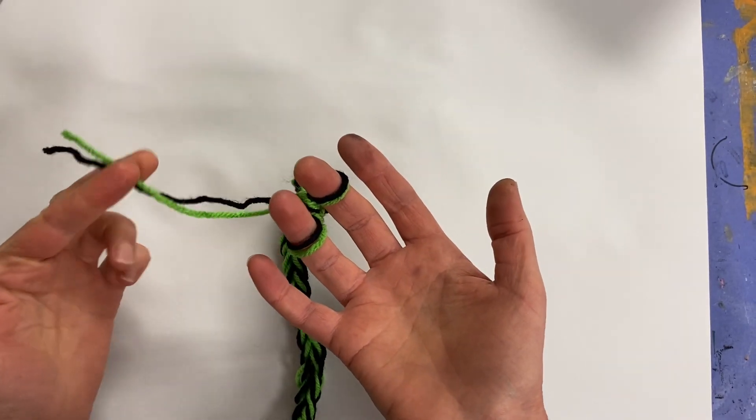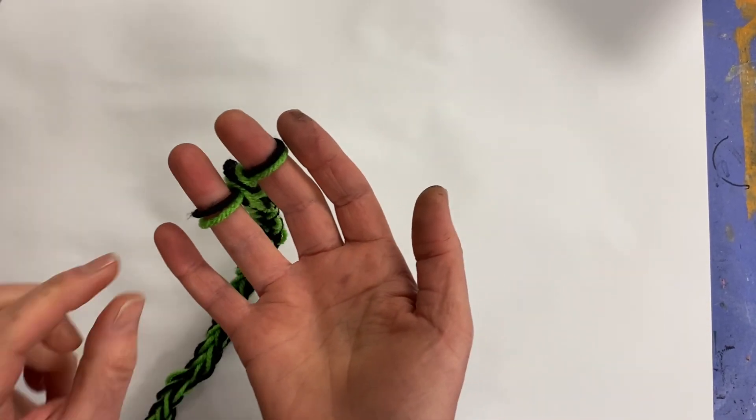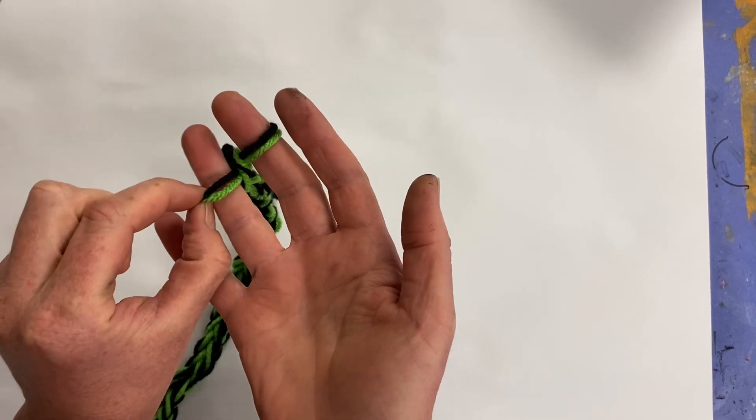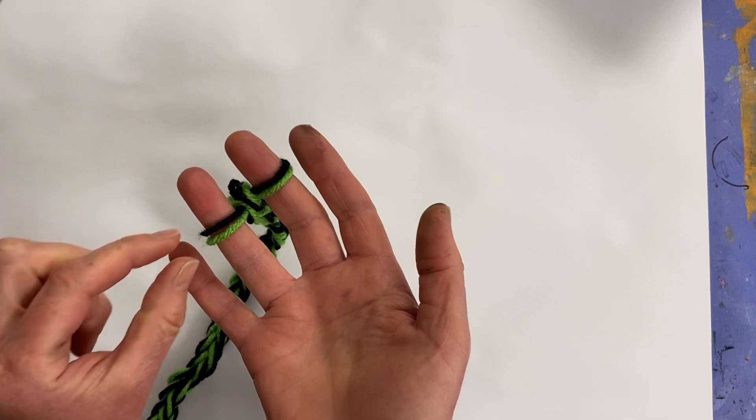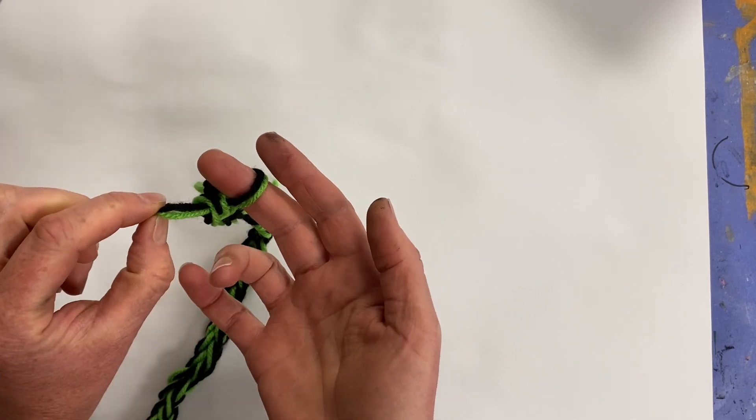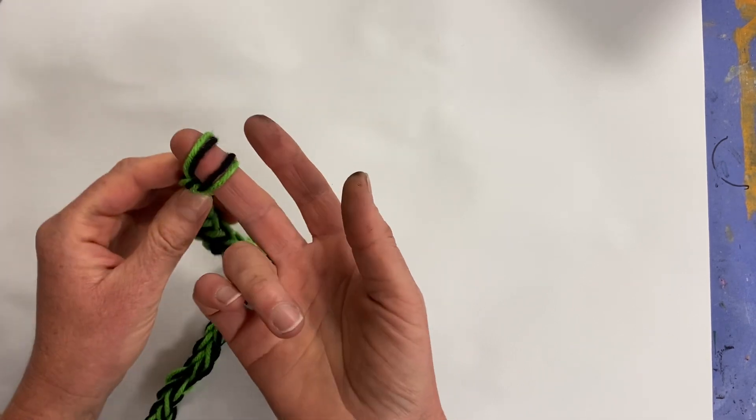Once you're nearly out of yarn, you are going to end your weaving by simply taking one of the loops and putting it onto the other finger. So I'm going to hold it tight to this one and put it on top of this finger.